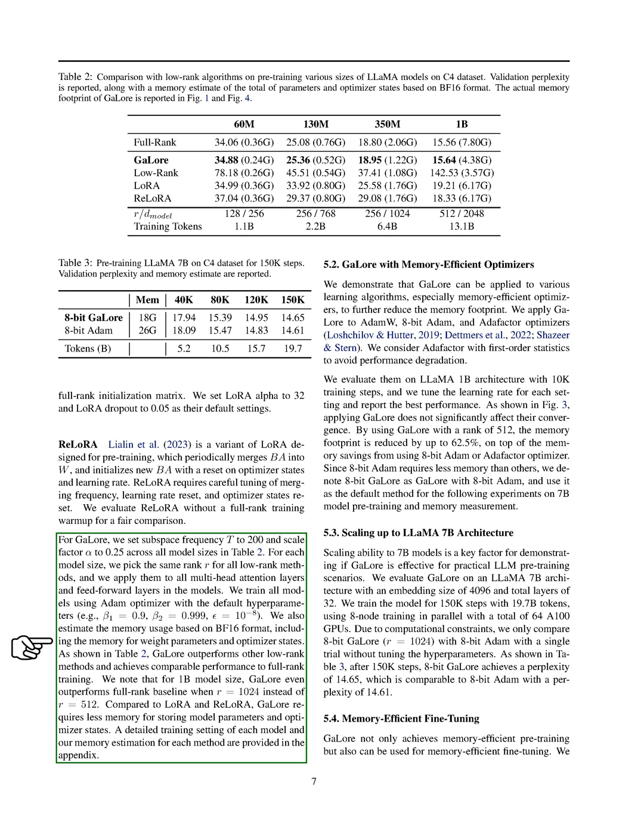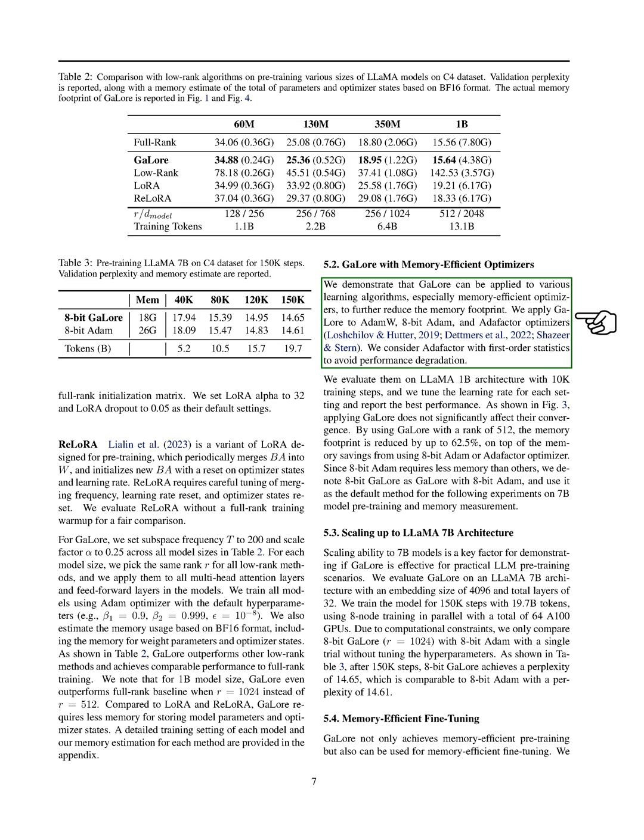We train all models using the Adam optimizer with default hyperparameters. GaLore outperforms other low-rank methods and achieves comparable performance to full-rank training. GaLore requires less memory compared to LoRA and ReLoRA for storing model parameters and optimizer states. We also demonstrate that GaLore can be applied to memory-efficient optimizers like AdamW, 8-bit Adam, and Adafactor to further reduce memory usage. Applying GaLore with a rank of 512 reduces the memory footprint significantly.